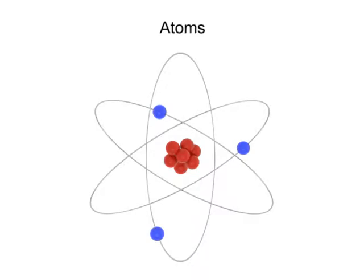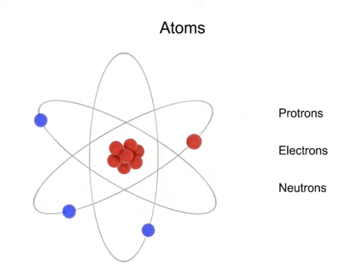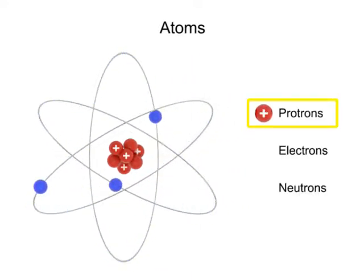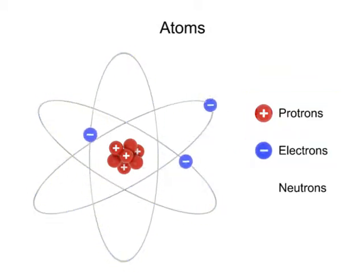Atoms make up all of the Earth's matter. Atoms can be broken down into three basic components: positively charged protons, negatively charged electrons, and neutrally charged neutrons. The number of these components and their arrangement determines the atom's elemental properties.